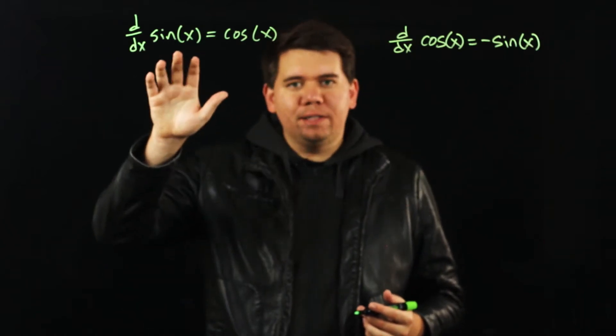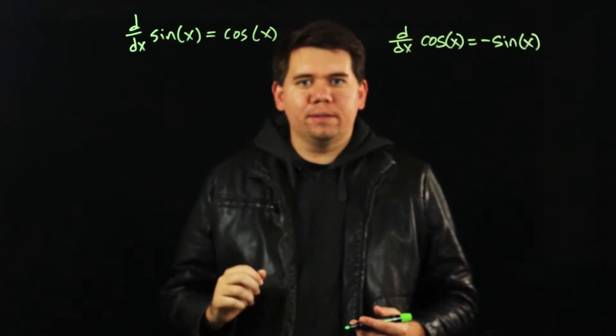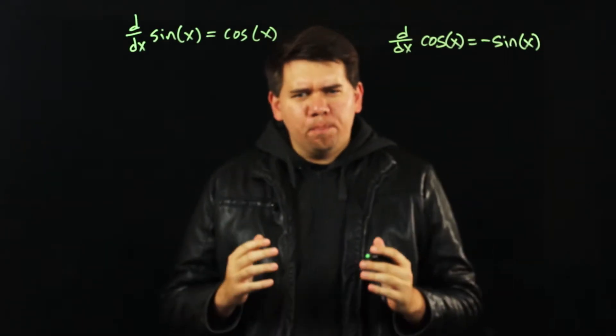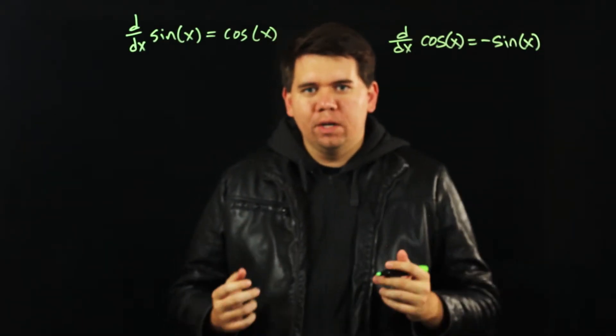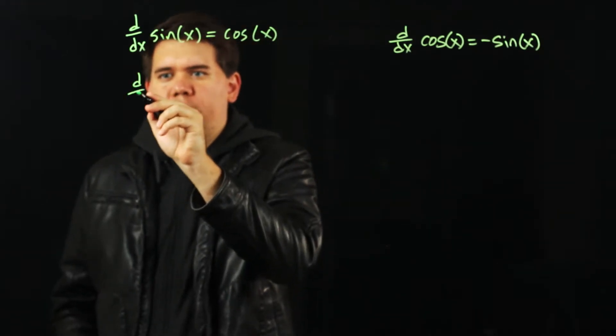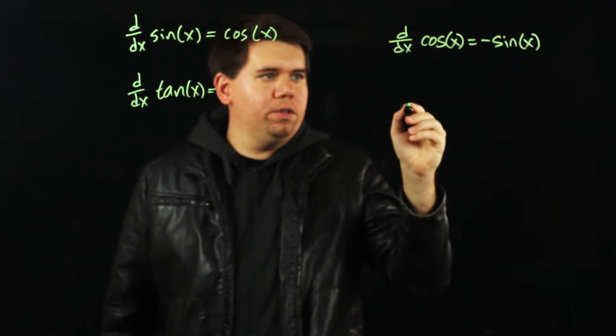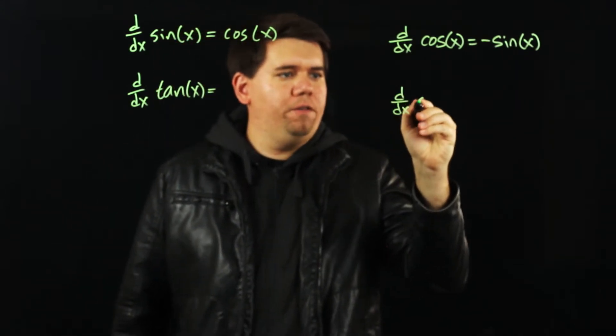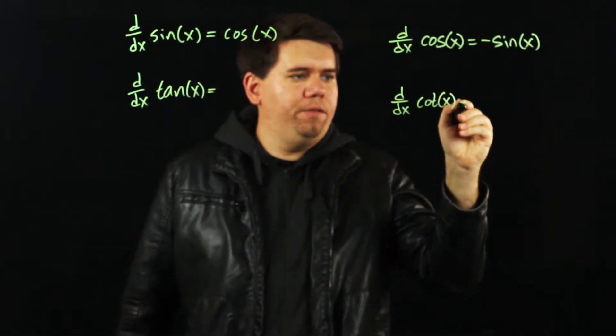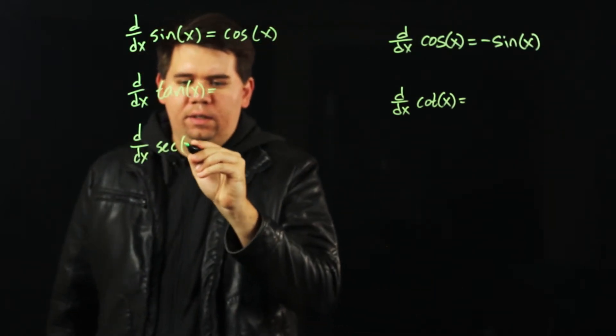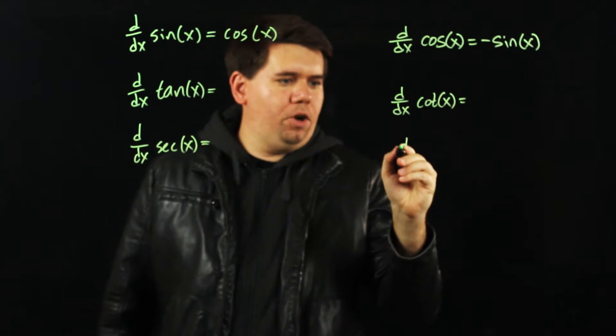We've already seen the derivative of sine of x is cosine of x and the derivative of cosine of x is minus sine of x. But how about the other trig functions? For example, what is the derivative of tangent of x or the derivative of cotangent of x or the derivative of secant of x and cosecant?